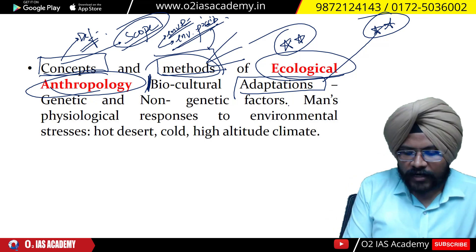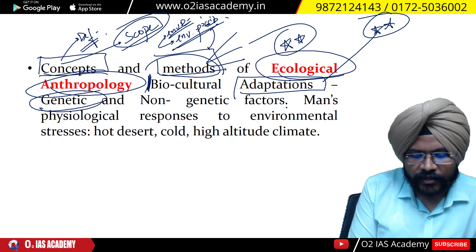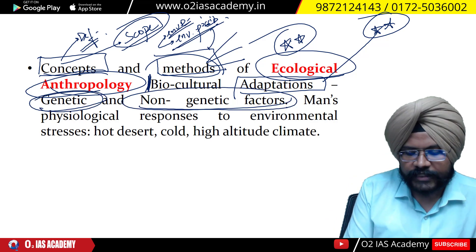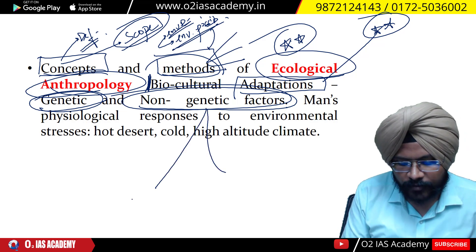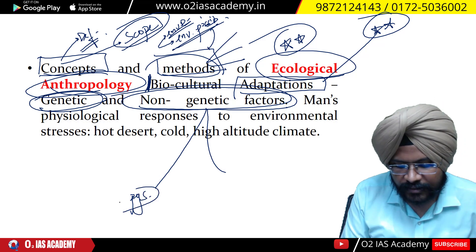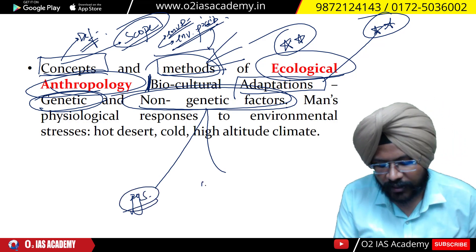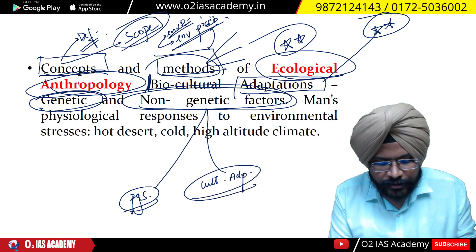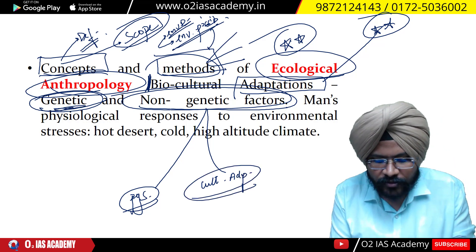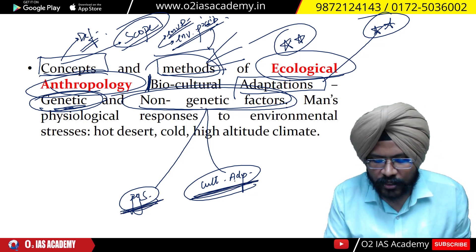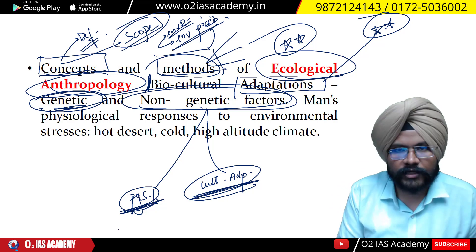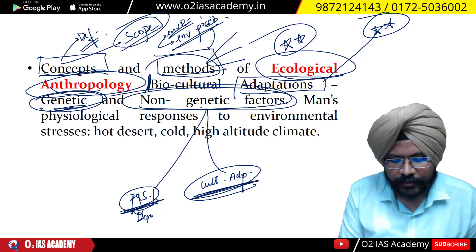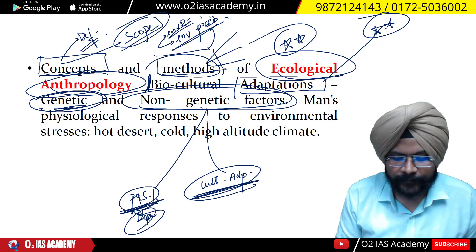Then comes the very important topic of biological adaptations. Adaptations are to be divided into two parts: genetic and non-genetic. Under non-genetic you have two things: physiological adaptations and cultural adaptations. Physiological adaptations are also called developmental adaptations in many books — so don't get confused.